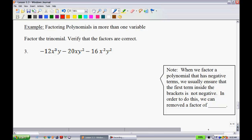There's a note here. When we factor a polynomial that has negative terms, we usually ensure that the first term inside the brackets is not negative. In order to do this, we can remove a factor of negative 1.